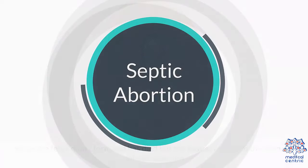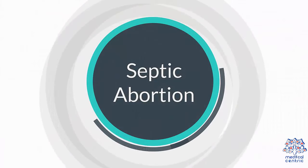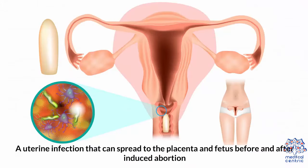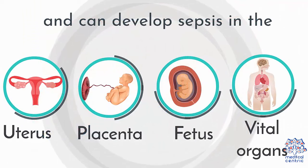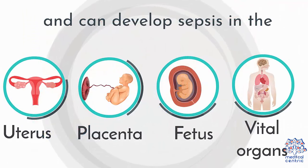Septic abortion. A uterine infection can spread to the placenta and fetus before and after induced abortion, and can develop sepsis in the uterus, placenta, fetus, and vital organs.